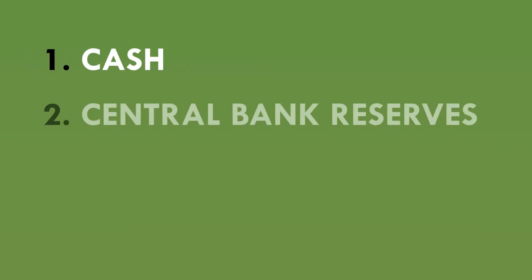So the first two types of money are: one, cash, and two, central bank reserves. Remember that central bank reserves are like an electronic version of cash that only the banks can use to make payments between themselves.